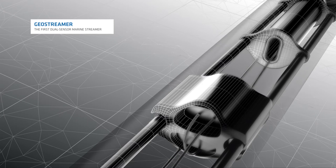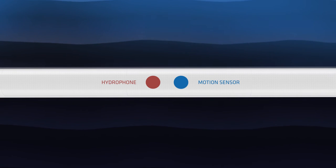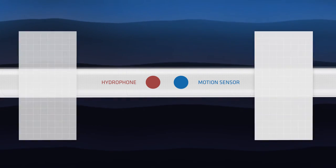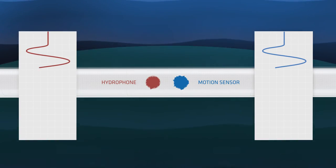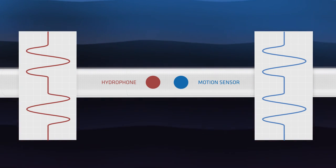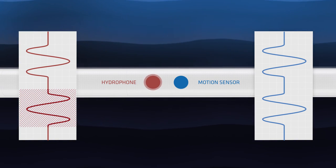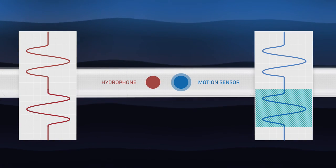Geostreamer comprises co-located hydrophones and vertical particle motion sensors. The two sensors record complementary upcoming and down-going wavefield information. The ghost is recorded with opposite polarity by the hydrophone and normal polarity by the motion sensor.